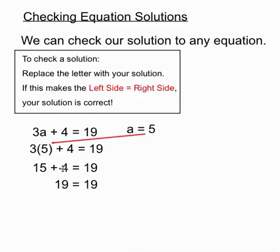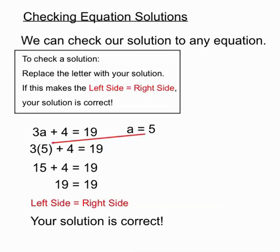And so we can see that this left hand side becomes 19 and the right hand side was 19. So our solution of a equals 5 has made the left hand side equal to the right hand side. And that's our sign to be confident that our solution is the correct solution.